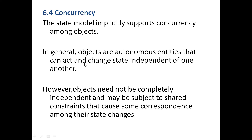Now let us go ahead with concurrency. The state model implicitly supports concurrency among objects. Concurrency means two or more things happening simultaneously. Autonomous objects can act and change state independently of one another; however, objects may be subject to shared constraints that cause some correspondence among their state changes. Let us understand these things with an example.